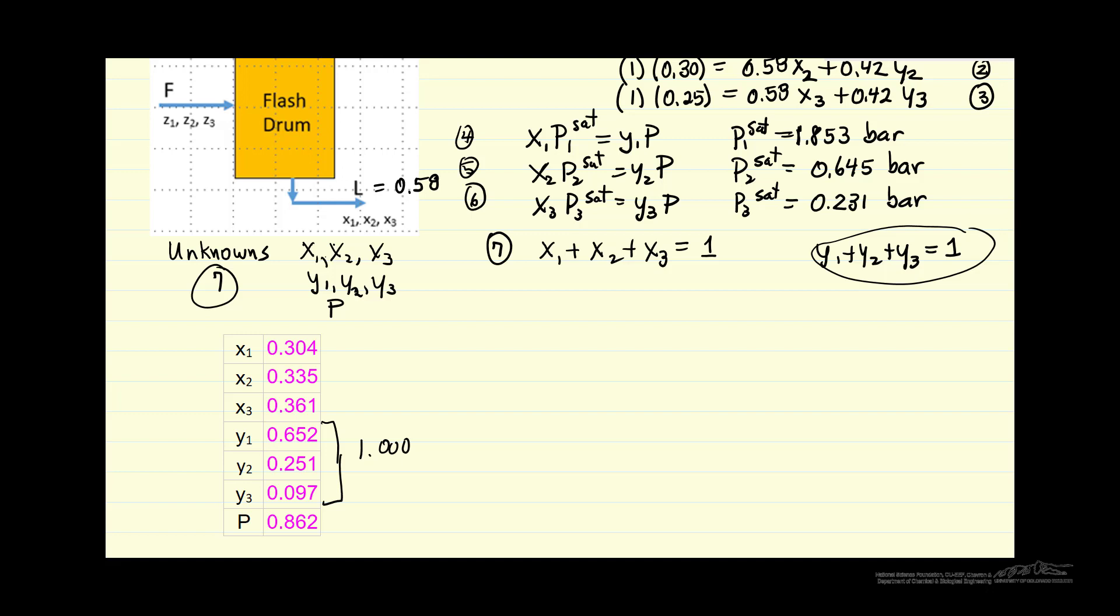The other, we can check things like is the pressure between the two saturation pressures. So the pressure 0.862 is indeed between the highest saturation and lowest saturation, as it should be.